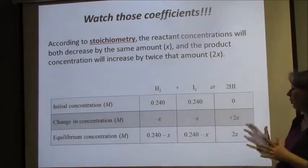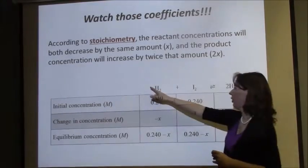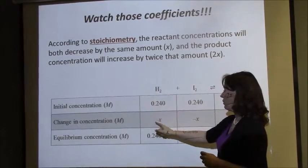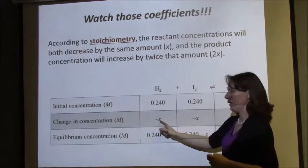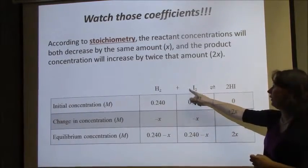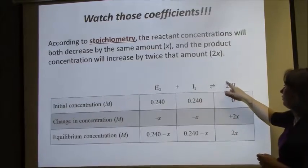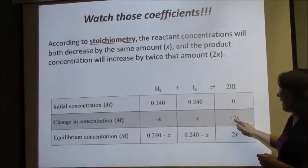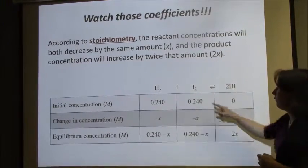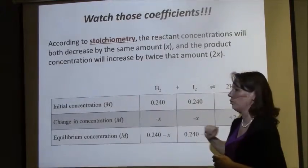If there had been a coefficient of 3, this would go down by 3X. If there had been a coefficient of 5, this would go down by 5X. If there had been a coefficient of 8, this would go up by 8X. So any coefficients you have need to be carried through in your ICE table.